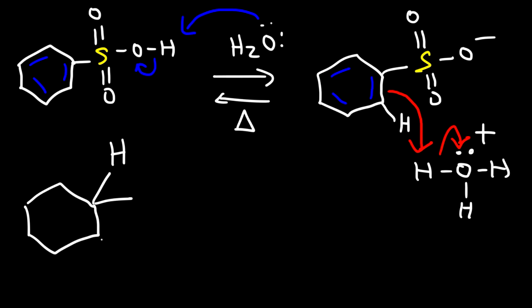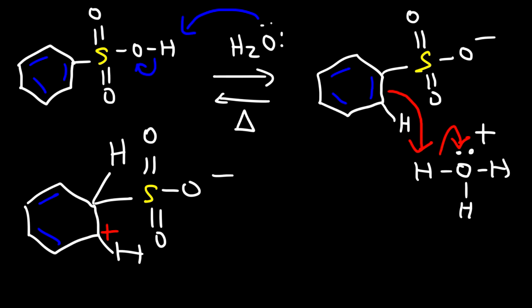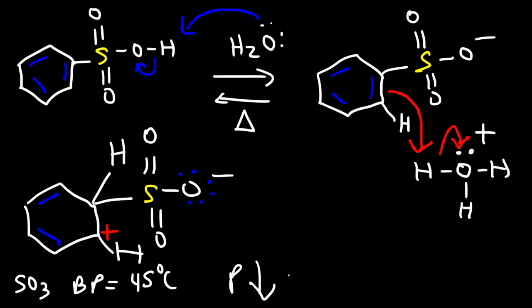We're going to add a hydrogen to the carbon bearing the sulfur atom, and on the carbon at the bottom we're going to have a positive charge. This is where we need heat to remove the sulfur group and generate SO₃. It's important to know that sulfur trioxide has a boiling point of 45°C. So if you heat the solution, it can leave as a gas, thus driving the reaction forward. According to Le Chatelier's principle, if you decrease the concentration of the product, the system shifts to increase the concentration of the product — so it shifts to the right, making more product.